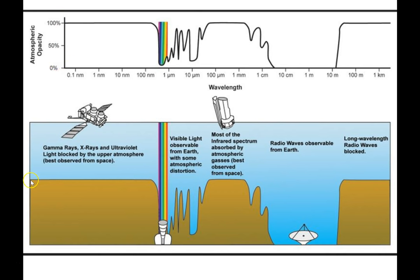You can see here that gamma rays, x-rays, and most ultraviolet rays are blocked completely by the Earth's atmosphere. The atmosphere is 100% opaque to these wavelengths, so they don't make it down to the Earth's surface.